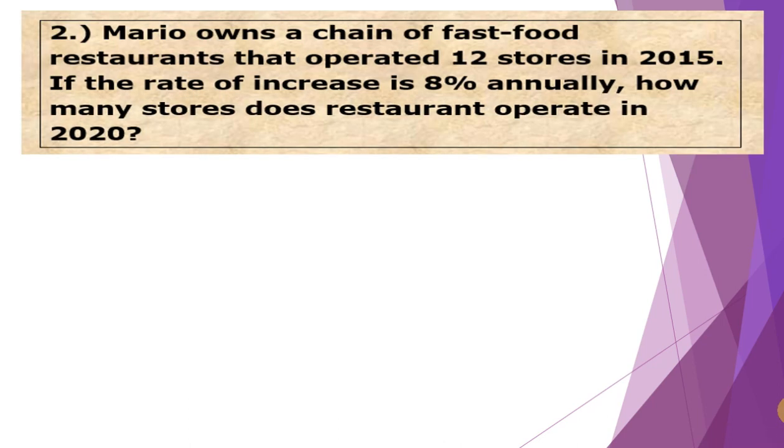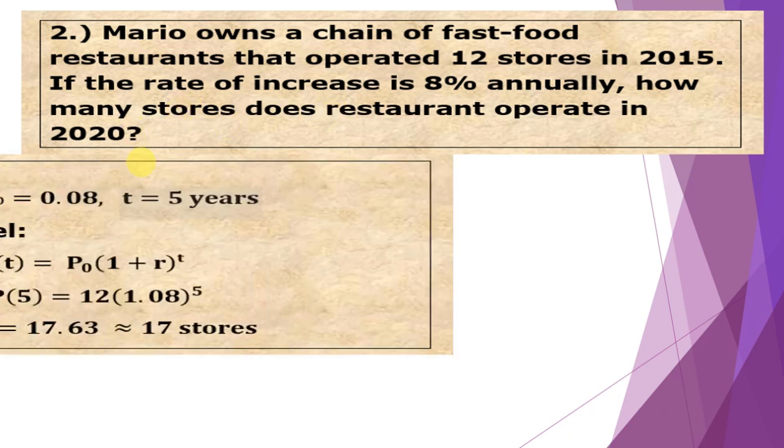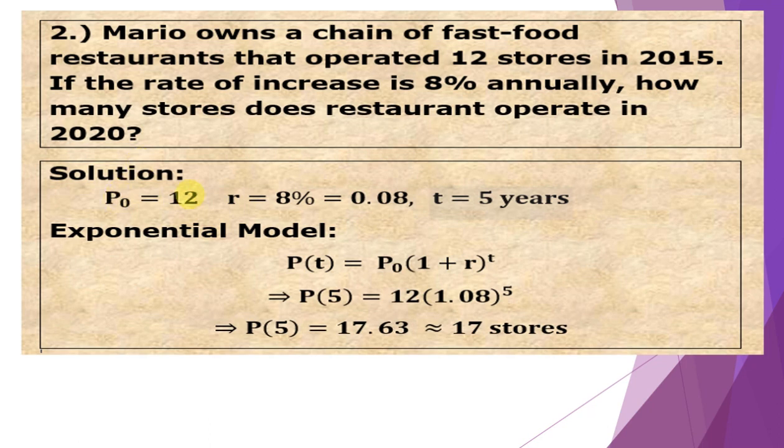Moving on to number two. Mario owns a chain of fast food restaurants that operated 12 stores in 2015. If the rate of increase is 8% annually, how many stores does the restaurant operate in 2020? For the solution, we have the initial amount is 12 stores with a rate of 8%, converted to decimal 0.08, and T = 5 years. Our exponential model is P(t) = 12(1.08)ᵗ. So P(5) = 12(1.08)⁵.